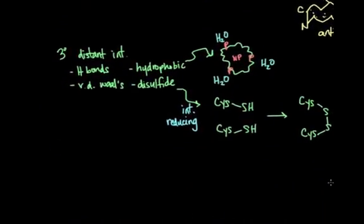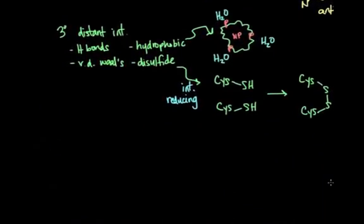Then there is one final level of protein structure, and that is called quaternary structure. And quaternary structure describes the bonding between multiple polypeptides. The same interactions that determine tertiary structure play a role in quaternary structure.